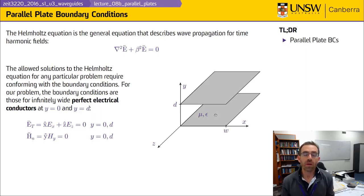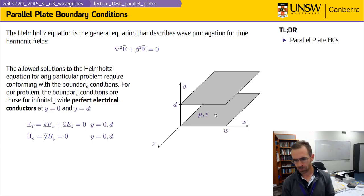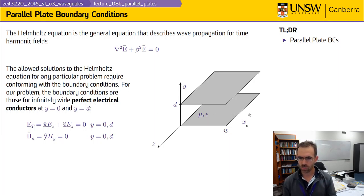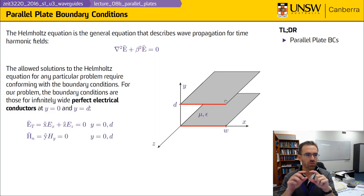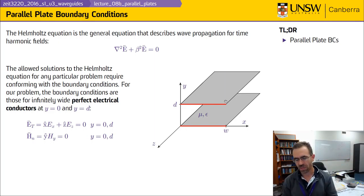It is known how to solve the problem with more complicated materials, but we're going to restrict ourselves to the simple case because they carry a lot of the important information. When we look at this problem, we can determine what the boundary conditions are we need to apply. The boundaries in this particular case will be at y equals zero and y equals d. Strictly speaking, x is between zero and w, but we're going to treat these plates as approximately infinite in extent.